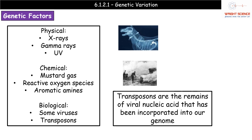The second category is chemical mutagens. For those with history knowledge, mustard gas is actually a chemical that, while unpleasant in itself, also increases the risk of mutation. Other A-level chemistry examples include reactive oxygen species and aromatic amines. The last group is biological mutagens — certain viruses can increase the risk of mutation, as can transposons, which are basically the remains of viral nucleic acid that has been incorporated into our actual genome.